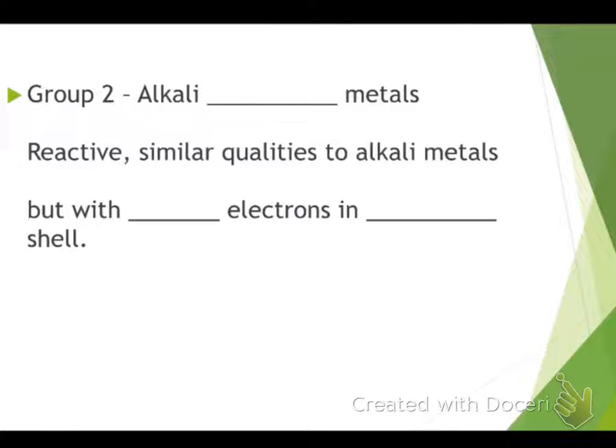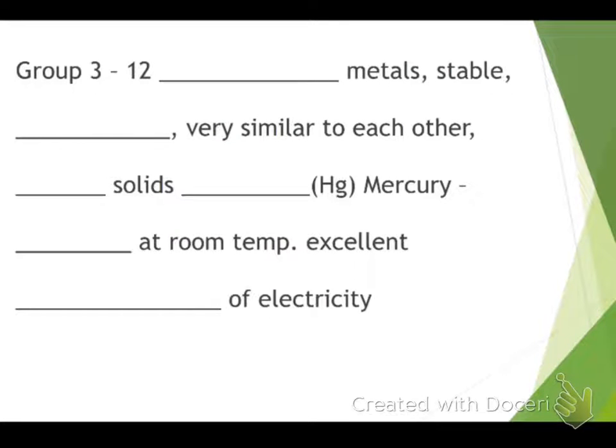Group two, the alkaline earth metals, are reactive. They have very similar qualities to alkali metals, but this time there are two electrons in the outermost shell.